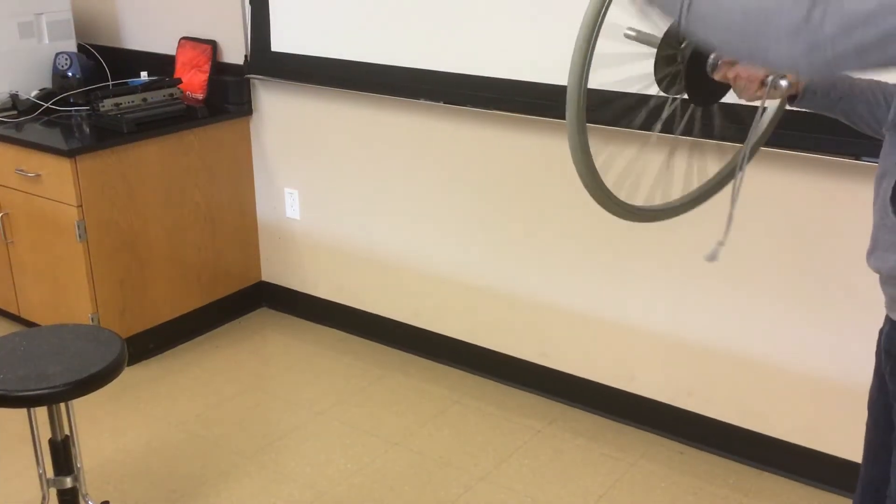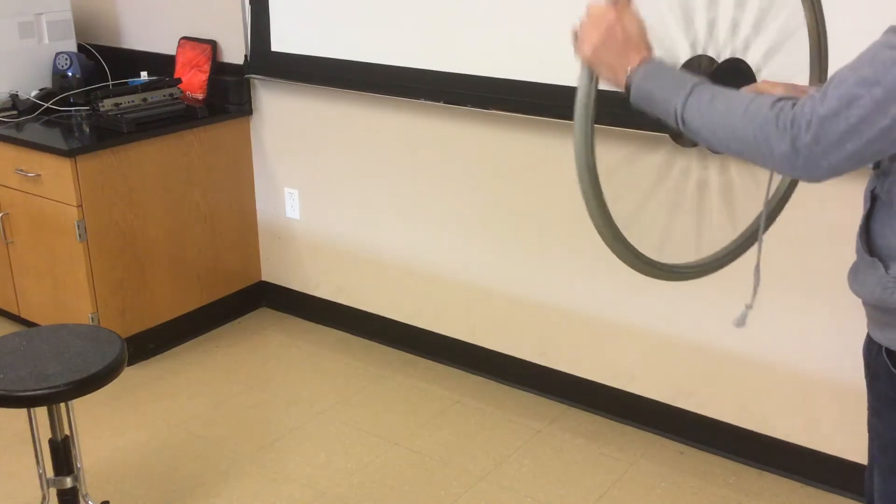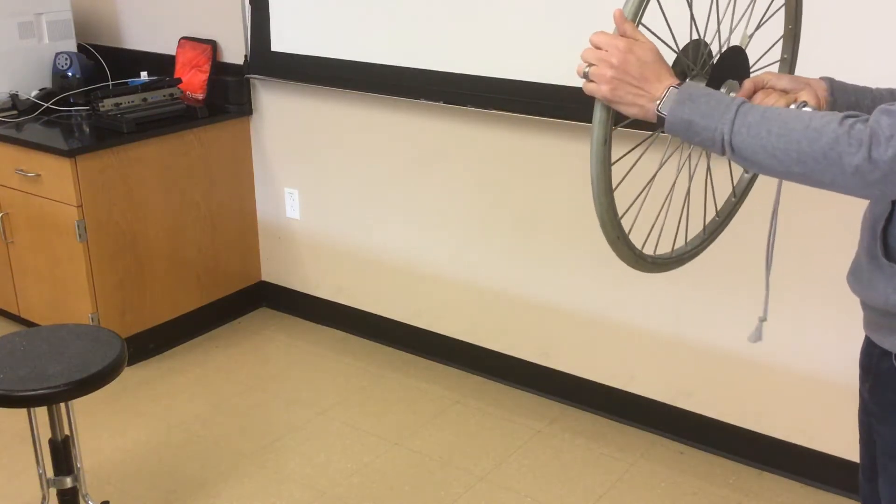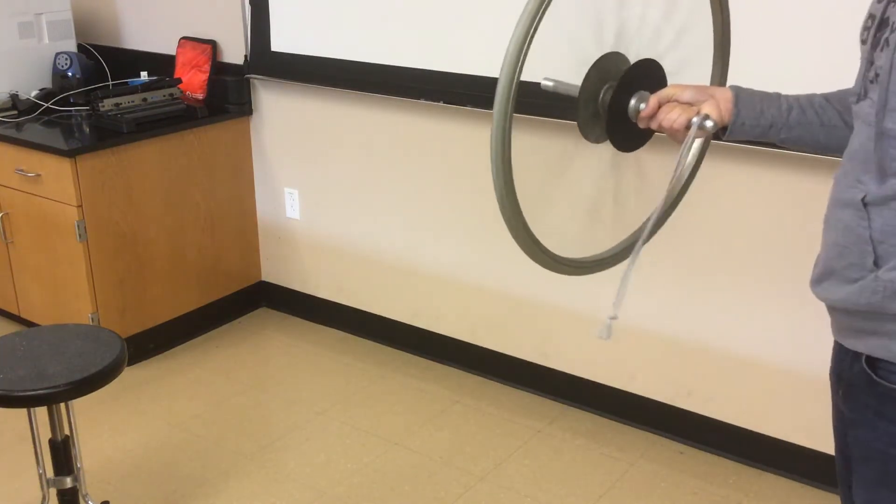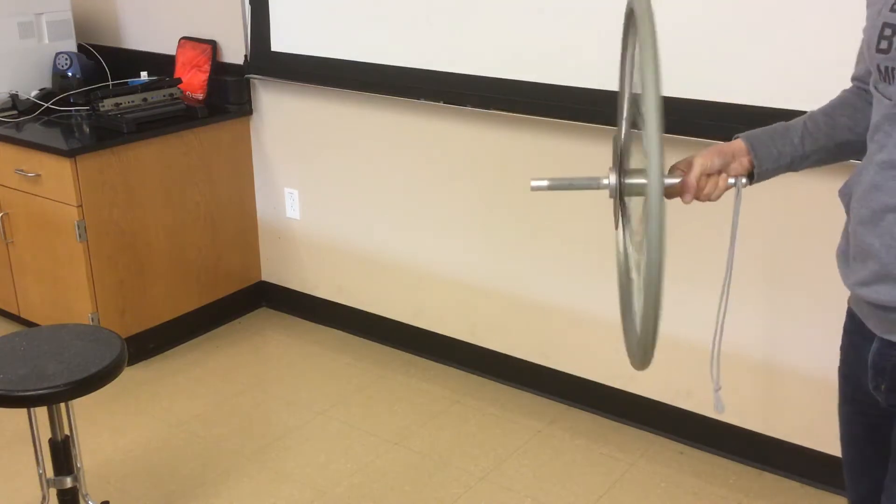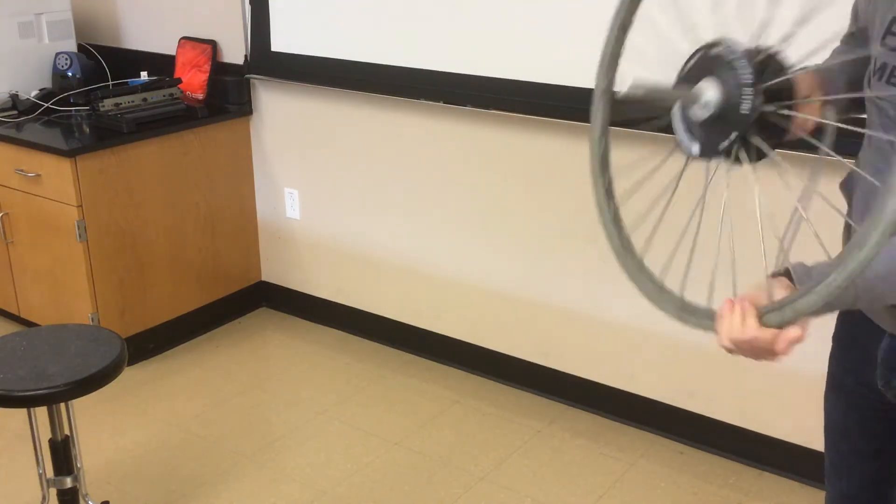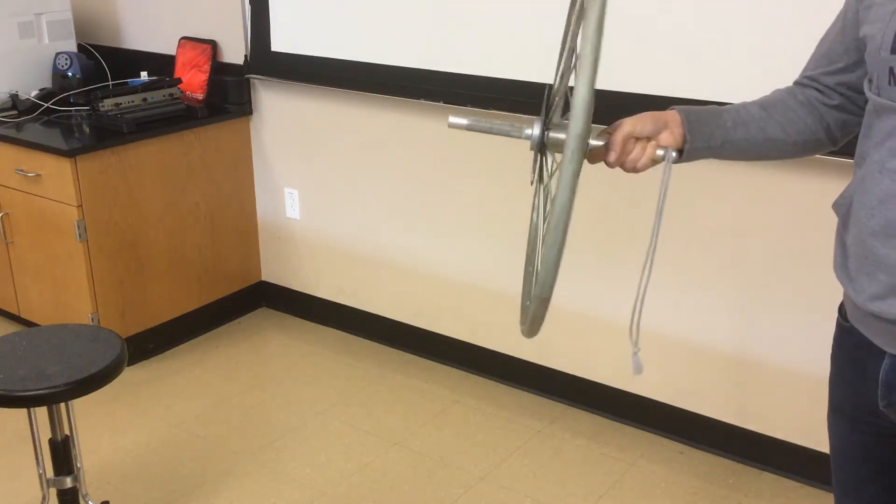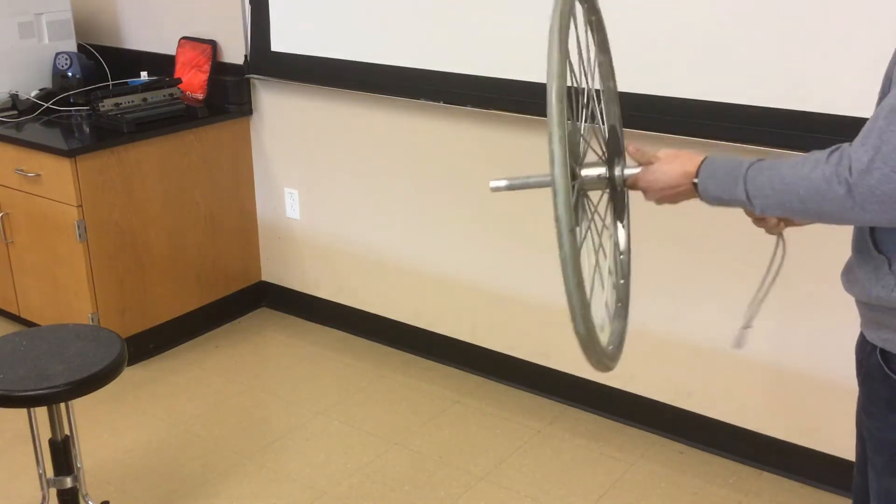Here's a big, heavy bike wheel with a pretty significant amount of rotational inertia. The faster I spin it, the more angular momentum it has. If it's not spinning at all, it has no angular momentum to conserve.